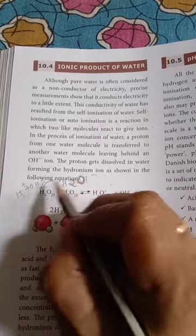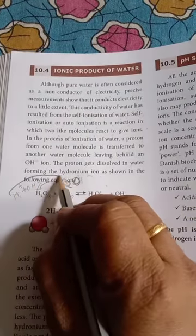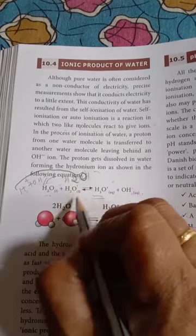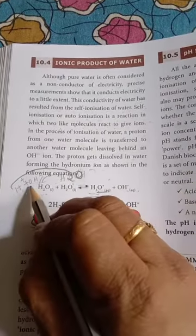H2O. So what happened? This H plus, the proton from one water molecule, will go to another water molecule and form H3O plus. And it is leaving behind OH minus ion.